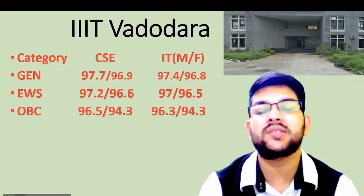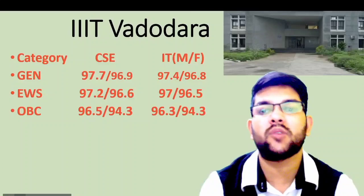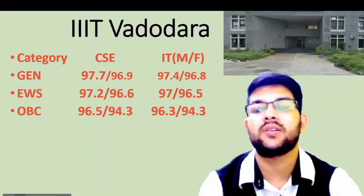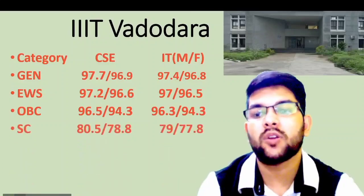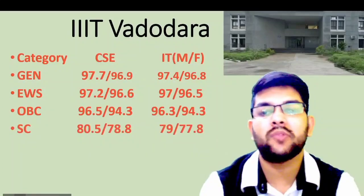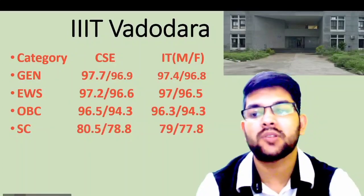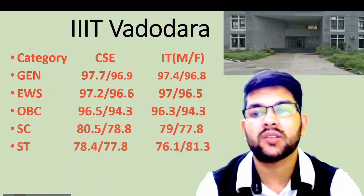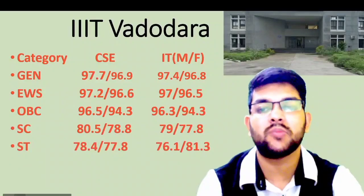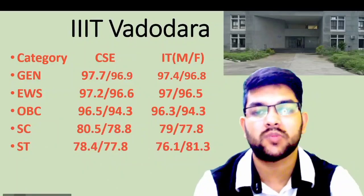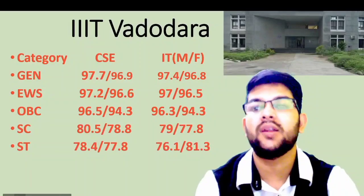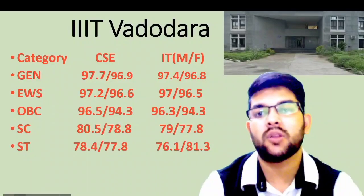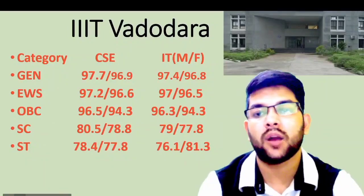For OBC: 96.5 and 96.3 — that is for male candidates; female candidates can check after the slash. For SC: 80.5 and 79 percentile, and for ST: 78.4 and 76.1 percentile. After the slash you can check for female candidates.